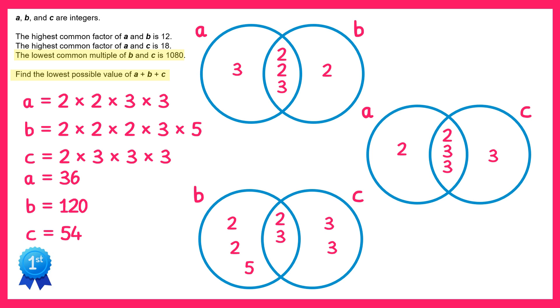So the lowest possible value of A plus B plus C is all of these added together, which is 210.